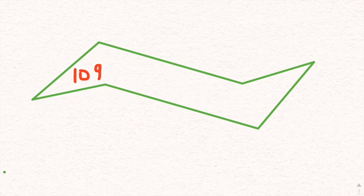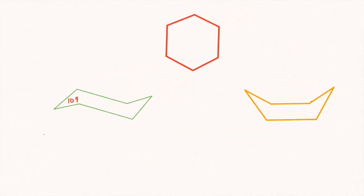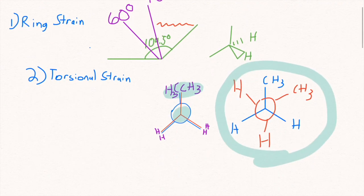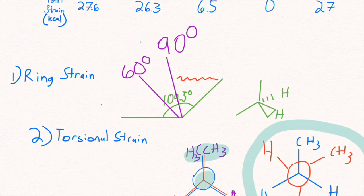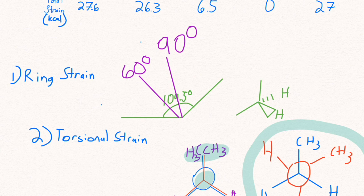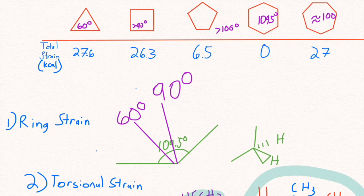They make 109 degree angles, meaning they are extremely close to that 109.5. Now since it has no ring strain at all, it basically has almost no torsional strain. This has a total of zero and is basically our island of stability.